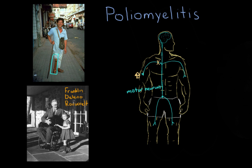Another prominent historical figure diagnosed with polio was Franklin Delano Roosevelt, FDR, the 32nd President of the United States. He was infected in 1921, which left him permanently damaged from the waist down. Interestingly, FDR didn't want to show the public his ailment, so there are very few pictures of him in a wheelchair. Though he was diagnosed with polio, it's now believed he was misdiagnosed and that his symptoms were actually caused by Guillain-Barré syndrome — potentially one of the most prominent misdiagnoses in history.